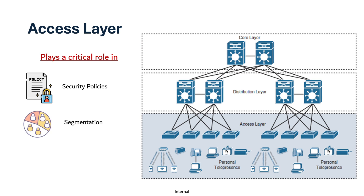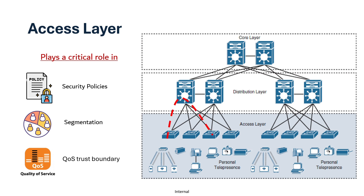The access layer supports segmentation using VLANs for better management and performance — all VLAN segmentation is done at this layer. It also establishes the quality of service trust boundary for a seamless user experience; for end users, the trust boundary starts here. Access switches, wireless access points, and IP phones are mostly part of the access layer. In the hierarchical LAN design, the access switches are not interconnected to each other.